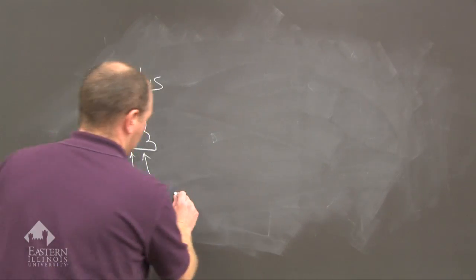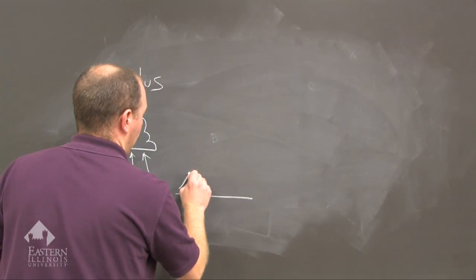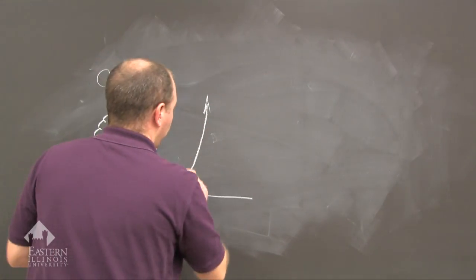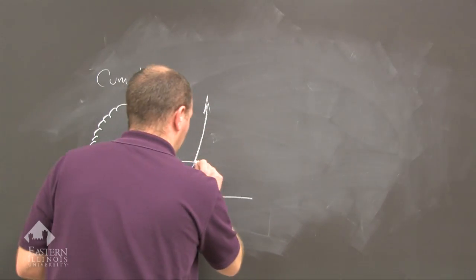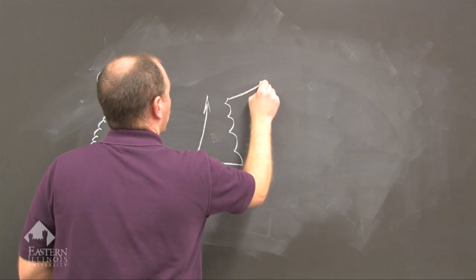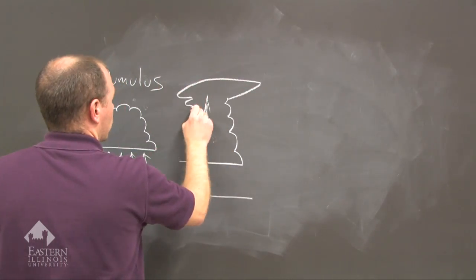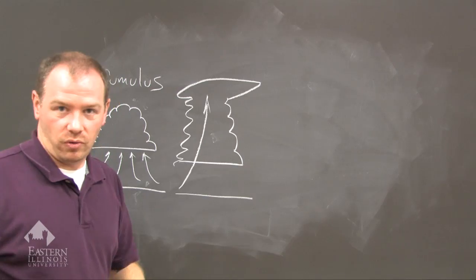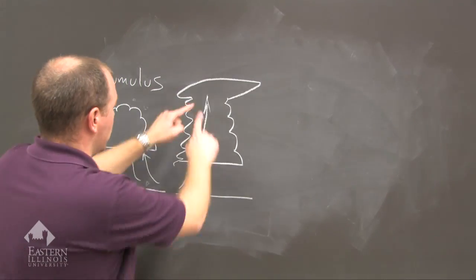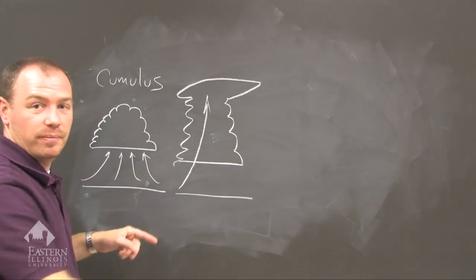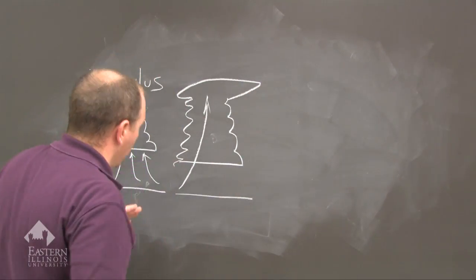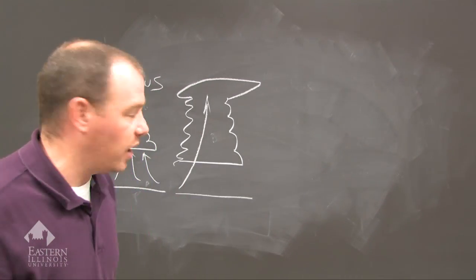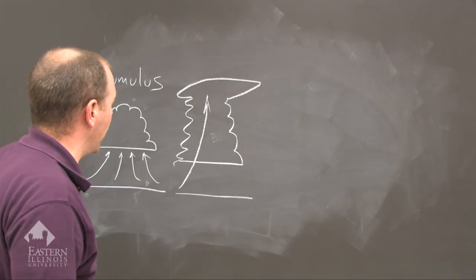The second stage: we continue to have this warm, moist updraft feeding the cloud. The cumulonimbus starts to grow, and as it continues to grow, it hits the top and then it starts to form an anvil. The main ingredient is warm, moist air feeding this cloud.